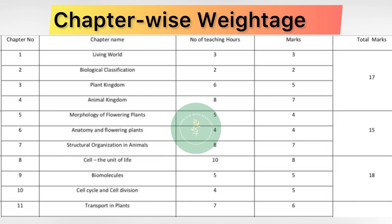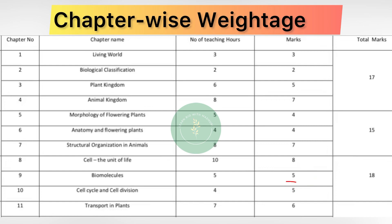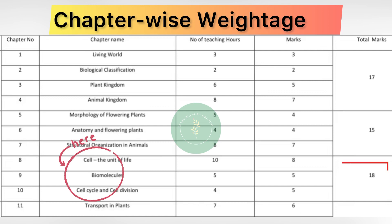Moving on to unit 3, chapter number 8, Cell: The Unit of Life — marks allotted from this chapter is 8 marks. Chapter number 9, Biomolecules — marks allotted is 5 marks. Chapter number 10, Cell Cycle and Cell Division — marks allotted is 5 marks. So totally from unit 3, 18 marks have been allotted in the question paper.